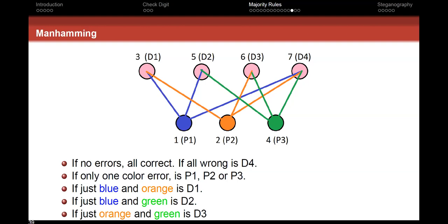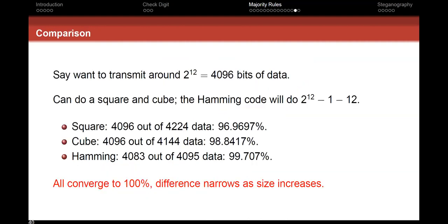I want to try not to give you all the answers but to give you interesting questions to think about. If you need to transmit around 4,000 bits of data, compare the Hamming code, the square, and the cube. The square is around 97% efficient; the Hamming code is around 99.7%. At this scale, the difference is not a huge hit — sometimes the simpler method is actually better because the efficiency is already so good that we don't really need to do anything more.